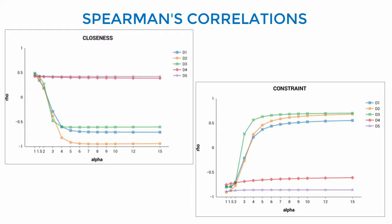The picture is different for D1, D2 and D3, which are much more affected by the variation of alpha. Their correlations quickly drop and become negative after specific alpha thresholds.